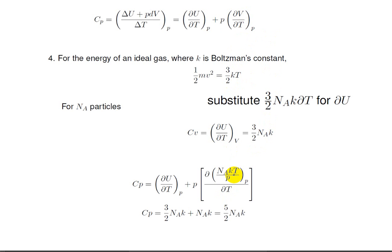We previously showed that the first term, delta U delta T, was equal to 3 halves nA k. And with a little inspection, the second term will have delta T over delta T in it, which cancels, as well as pressure that cancels, leaving nA times k. So what we end up with is that CP is 3 halves nA times k plus nA times k, which is 5 halves nA times k.